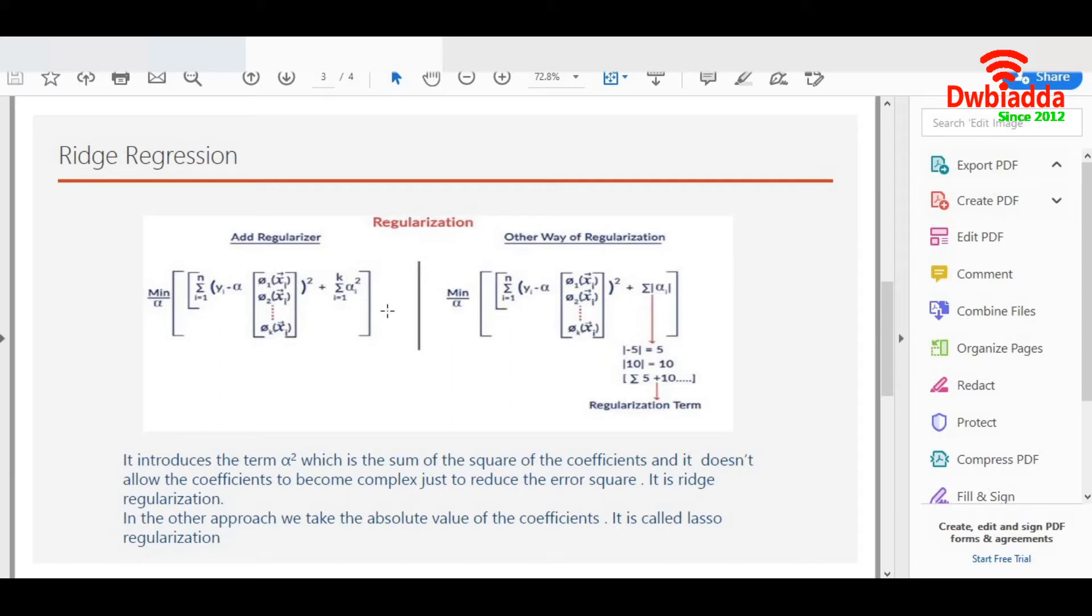We do a similar thing in lasso regression as well, in which we introduce the same term alpha, but instead of squaring it up, I take the absolute value of alpha. So even if it is a negative, let's say I have negative 5, it will consider it as 5. If I have 10, it will consider it as 10. So instead of squaring it up, I take the positive value out of it. So the absolute value of the coefficient and the square of the coefficient, this is the only difference between both of them.